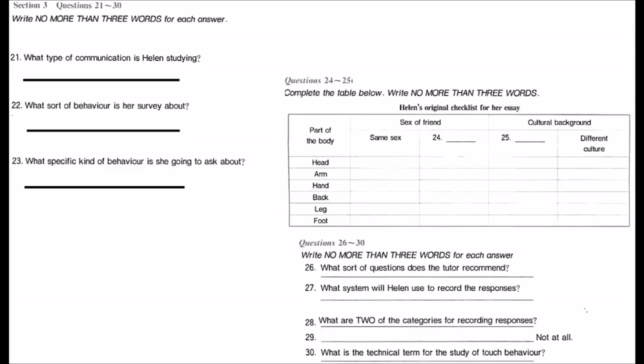Now, let's have a look at the list of parts of the body you're going to ask about. Um, I see. You've got the head, arm and hand, and, oh, it's over the page. The back, leg and foot. What about the shoulder and the thigh? They're important areas. And there are some others you should include too. Oh, yes, of course. I was in a rush and forgot those.